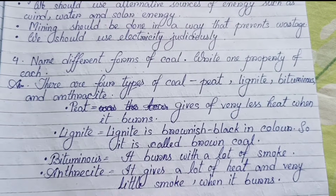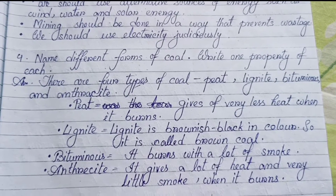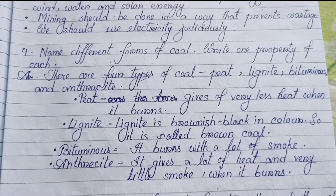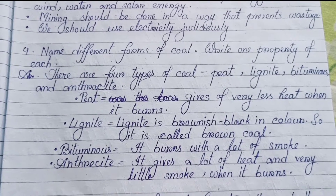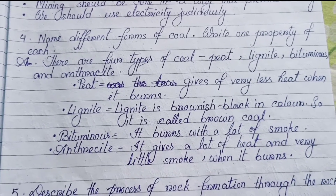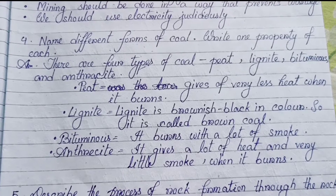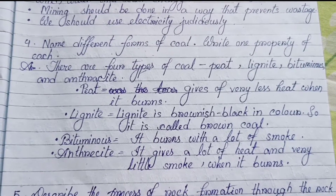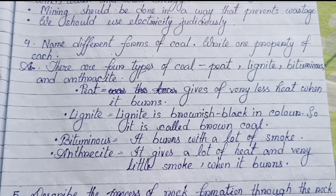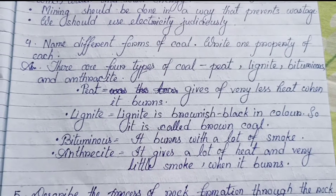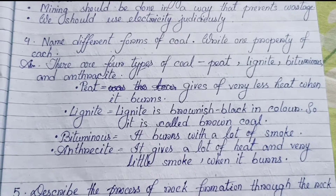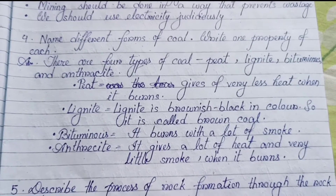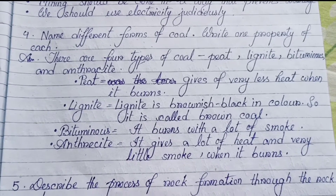Number four: Name different forms of coal and write one property of each. There are four types: Peat — gives very less heat when it burns. Lignite — brownish black in color, called brown coal. Bituminous — burns with a lot of smoke. Anthracite — gives a lot of heat and very little smoke when it burns.